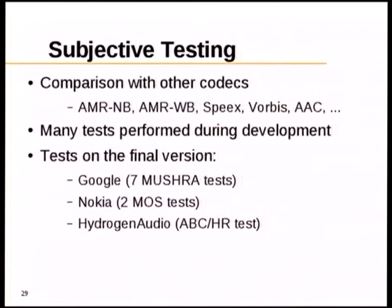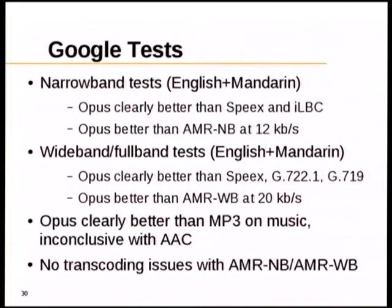Subjective testing compared Opus to AMR, Speex, Vorbis, and several flavors of AAC. Seven tests were conducted by Google, two MOS tests by Nokia, and one ABC/HR test from volunteers at Hydrogen Audio. The Google narrowband tests showed Opus was clearly better than both Speex and iLBC for narrowband, and better than AMR narrowband at 12 kbps — though not at lower bitrates. In wideband and fullband, Opus was much better than Speex G.722.1 (also called Siren), G.719, and better than AMR wideband at 20 kbps.